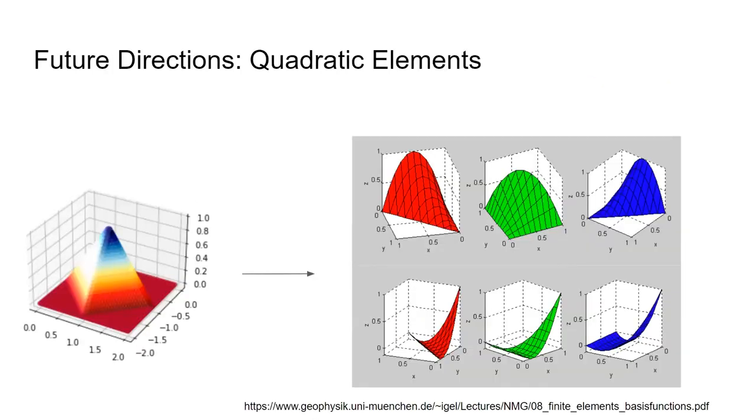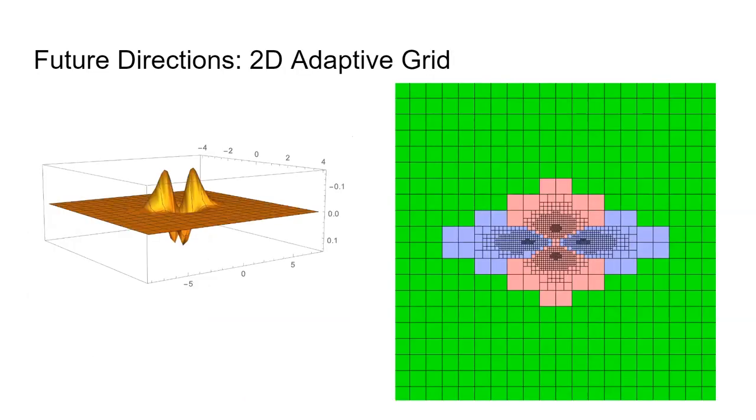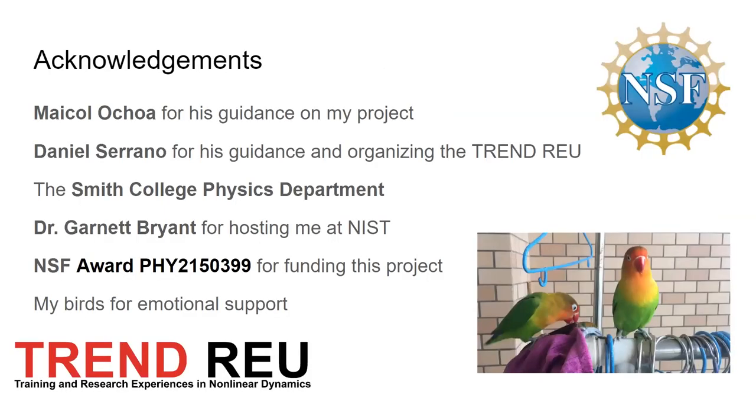A possible fix to this would be to move on from our linear basis elements to quadratic basis elements, which can capture curvature in our solution a lot better. Another future direction would be to move on to an adaptive grid to better improve the efficiency and accuracy of our calculation. I'd just like to thank my mentor in particular for helping me with this project.